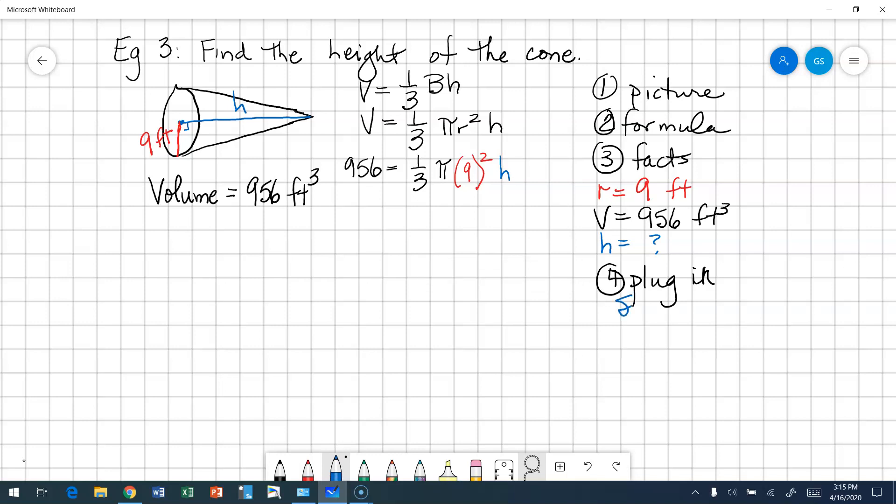Let's go ahead and, whoops, let me make that black, simplify. So 956 is equal to 1 third, 9 squared is 81 times h times pi. Is 81 divisible by 3? Well, let's think about this. 8 plus 1 is 9. So yes it is, because 9 is divisible by 3. So 3 goes into 3 once, and 3 goes into 8 twice with a remainder of 2. 3 goes into 21 seven times. So our simplified version is 956 is equal to 27 pi times our unknown, which is our height.